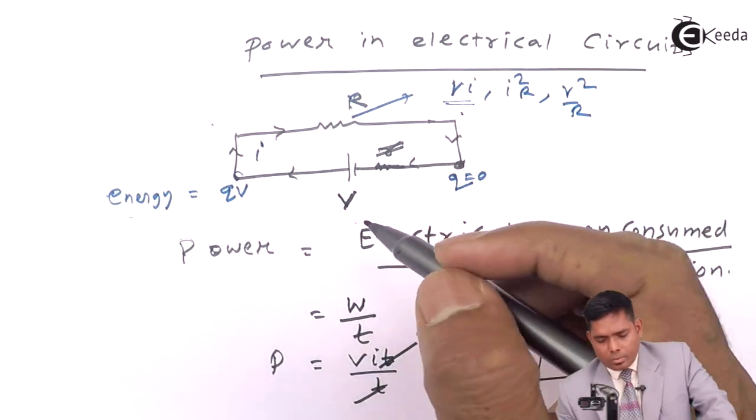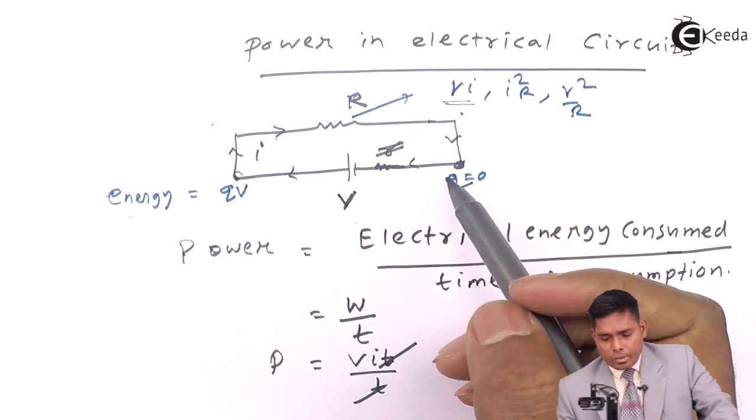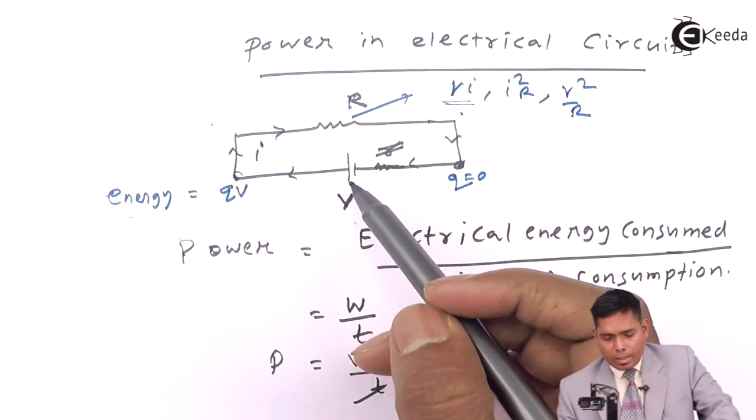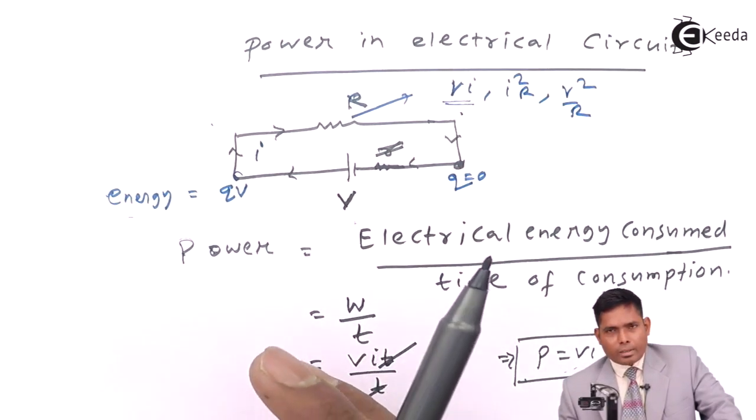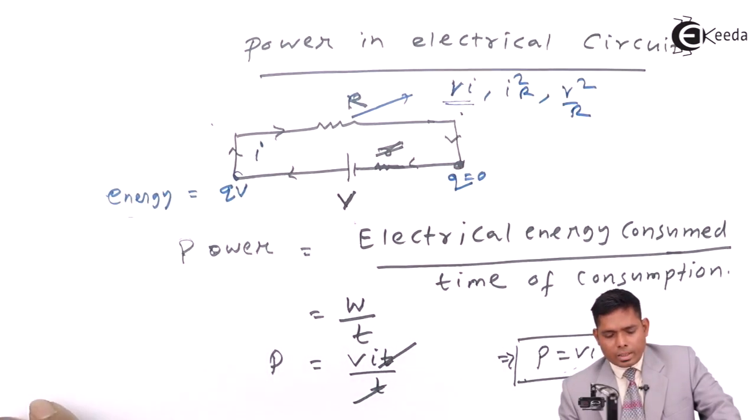I can also write in a different way. If dQ amount of charge is flowing in time dt, then this will be dQ by dt, that is I. So that power is the instantaneous power. Because I is dQ by dt, so VI, that is V dQ by dt, is instantaneous power.